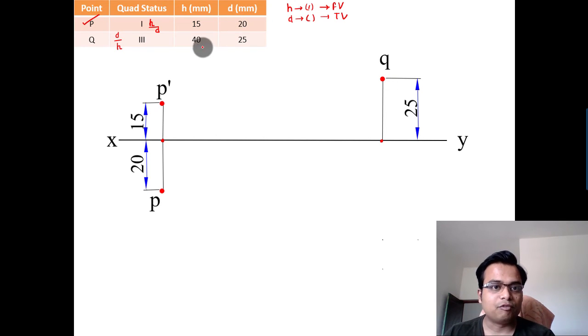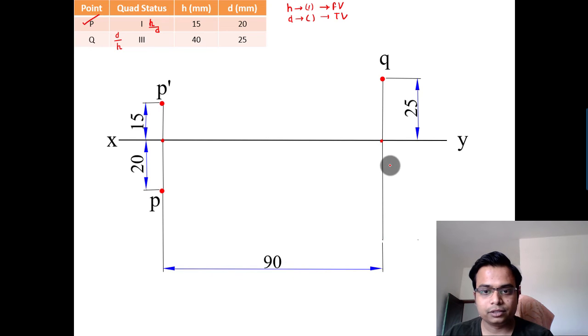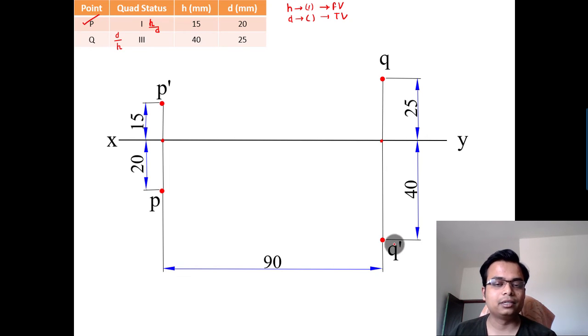And 40 below here. And since this is dimension H, therefore it has to be accompanied with a dash. Now the steps are pretty much obvious: you have to join the final top views—join P with Q since no dash.